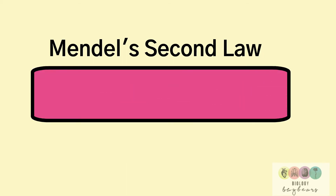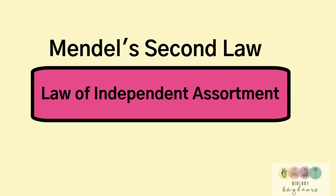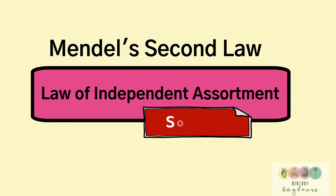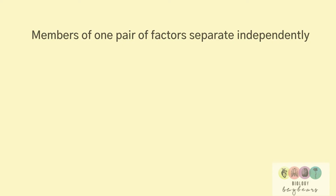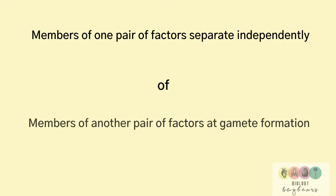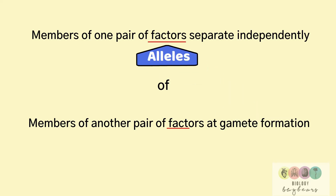This video covers Mendel's second law, the law of independent assortment. The way to remember it is to think of sorting — you're sorting different alleles. We must be able to state the law: members of one pair of alleles separate independently of members of another pair of alleles at gamete formation.